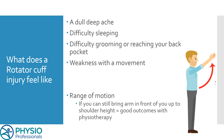So what does a rotator cuff injury feel like? Normally people describe a dull, deep ache inside the shoulder that feels like it's part of the bone, along with difficulty sleeping, difficulty grooming or reaching their back pocket, and weakness with movement. A lot of the time people also talk about getting pain down to their elbow on the outside of their arm. This is a common part of a rotator cuff injury because the muscles attach there — so that's why a physio will look at the shoulder even when you report elbow pain.